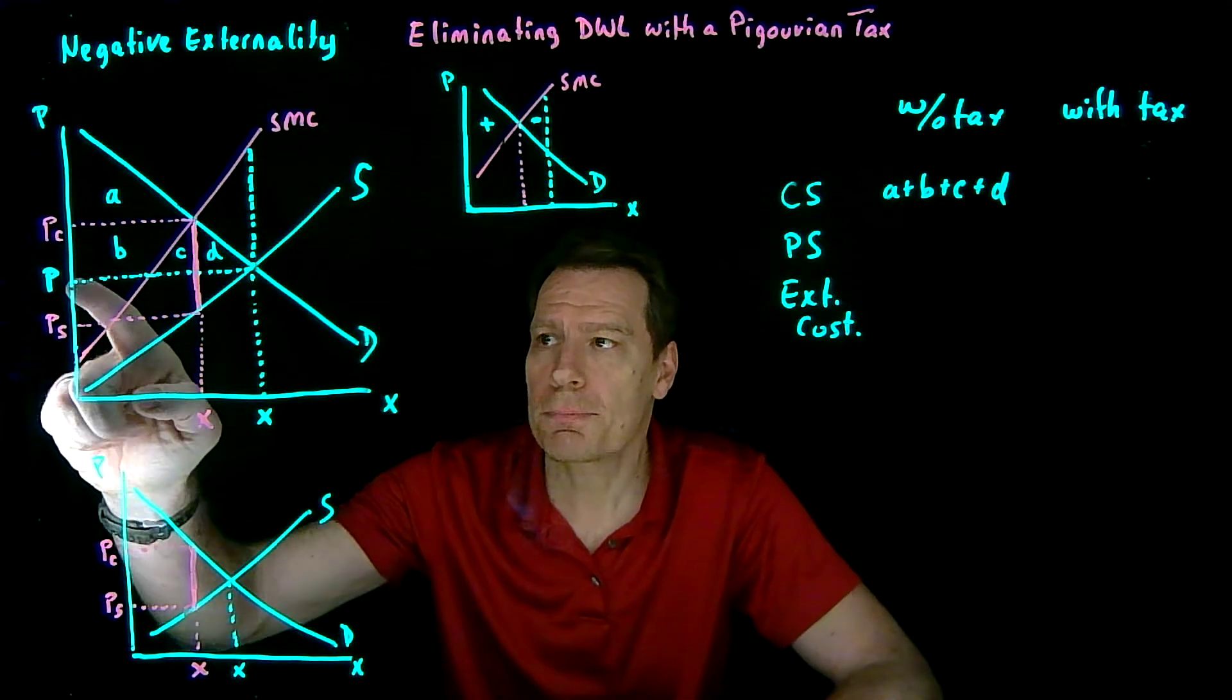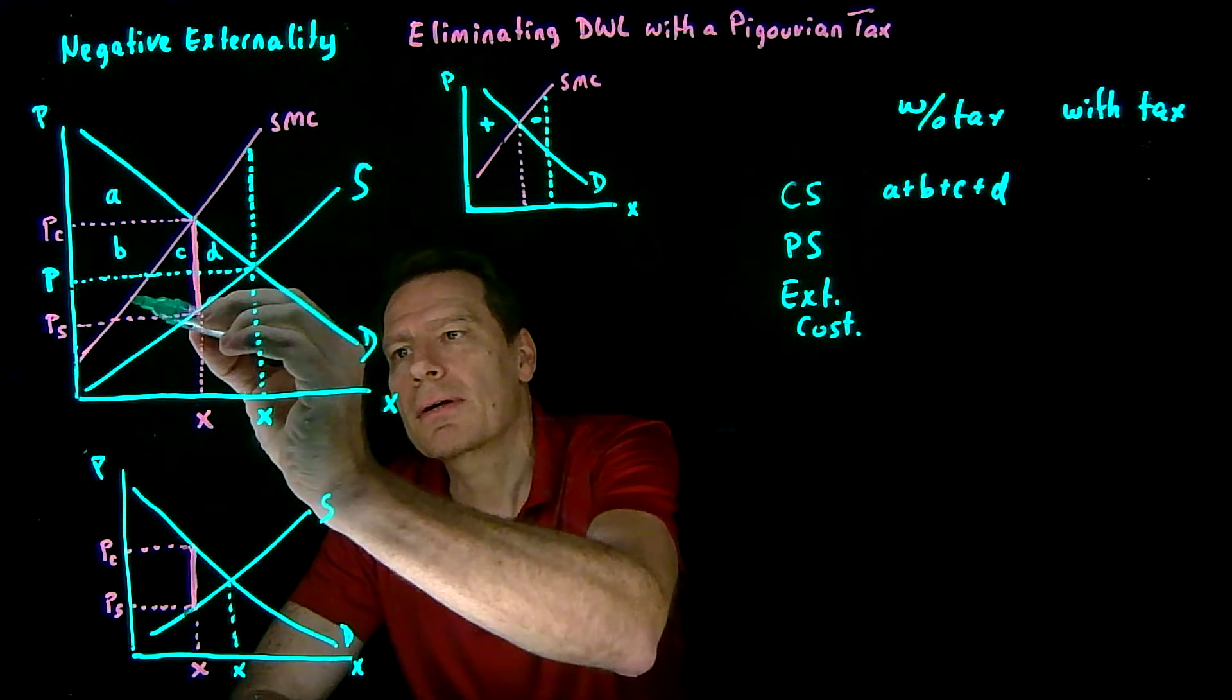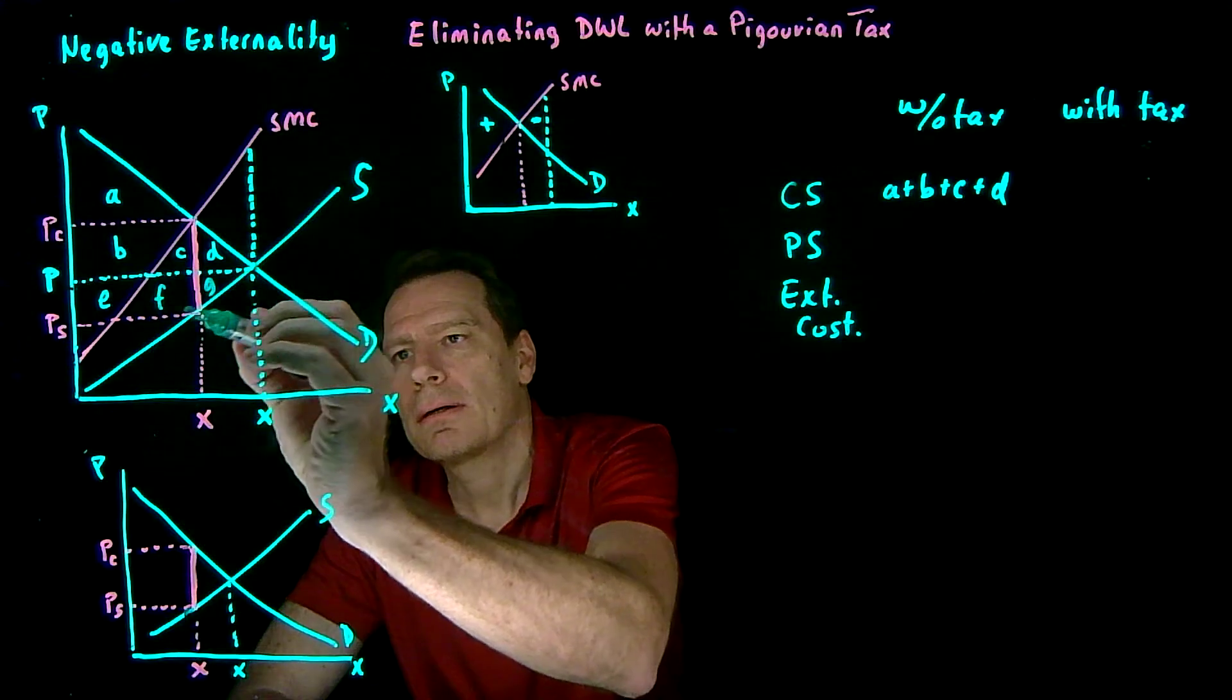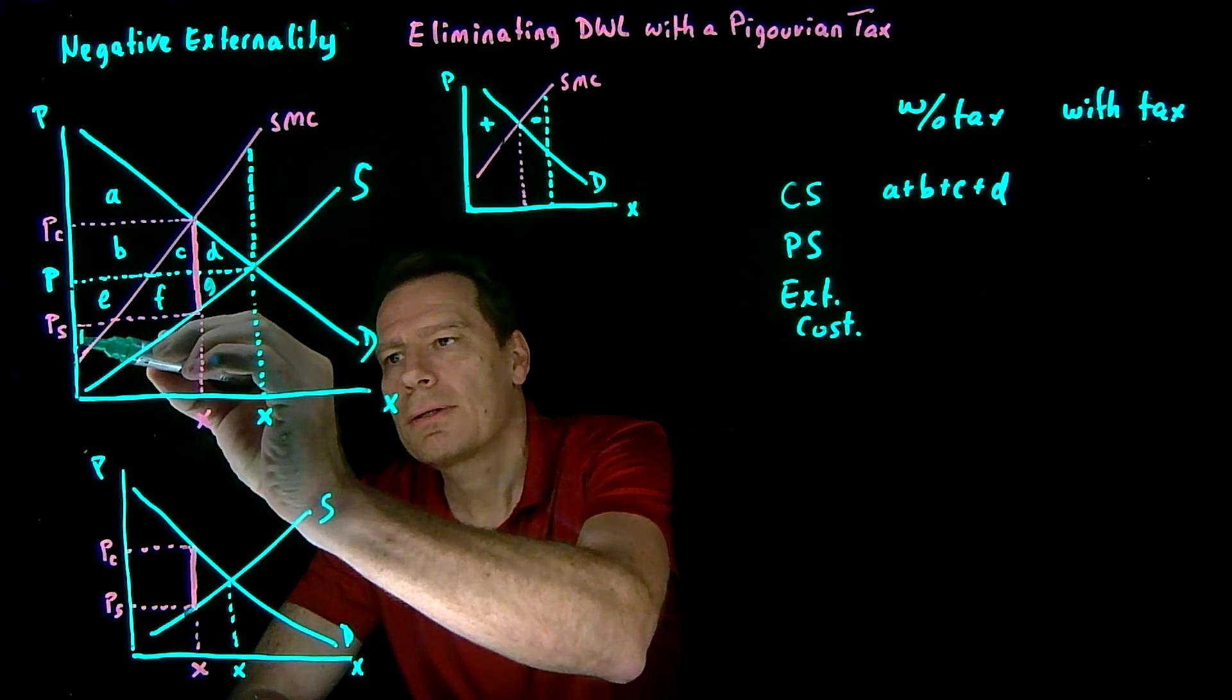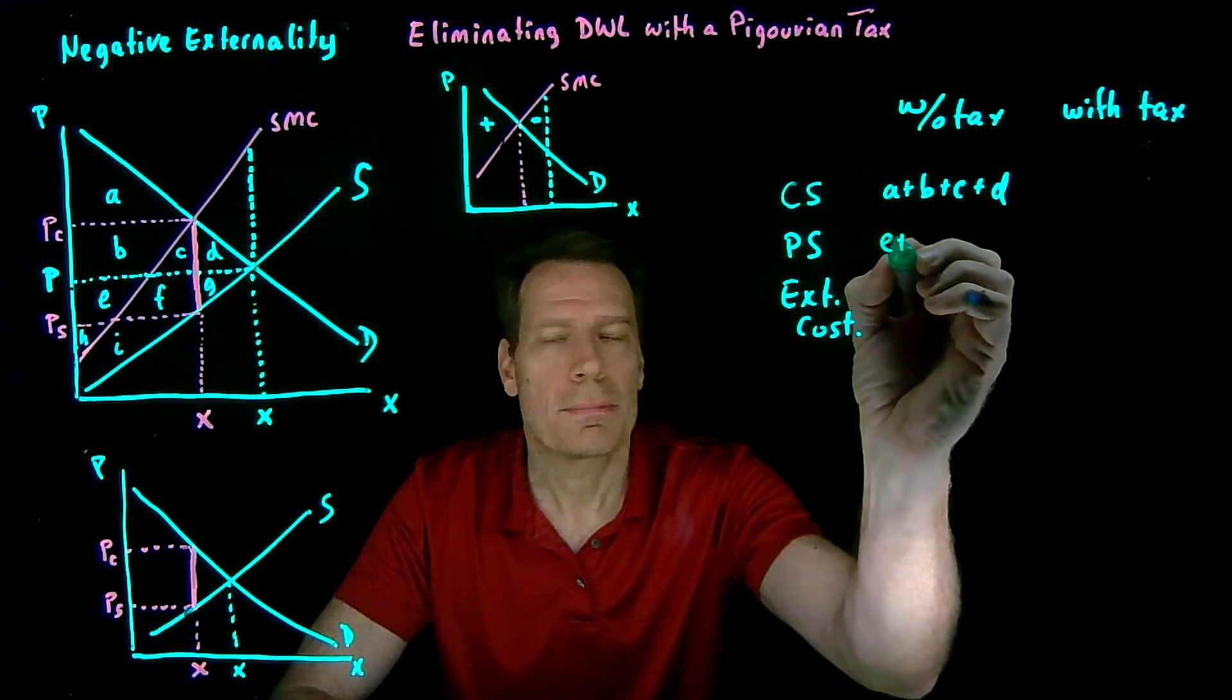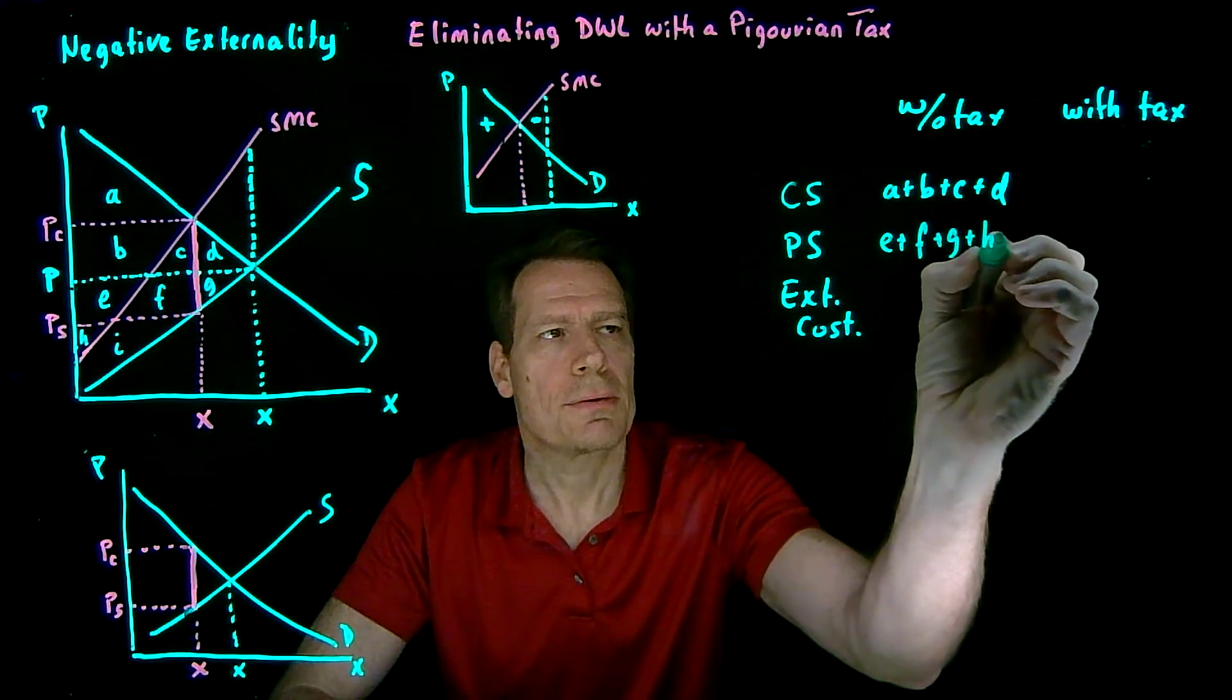Producers would get a surplus below that price down to the supply curve. So that would give us area E, F, G, H, and I. So E plus F plus G plus H plus I.